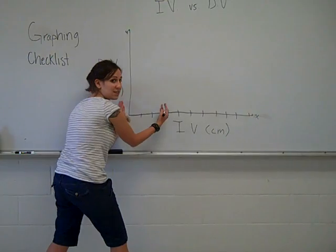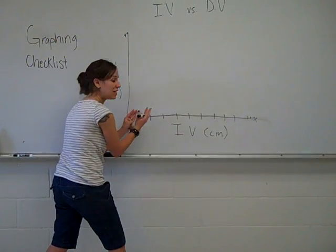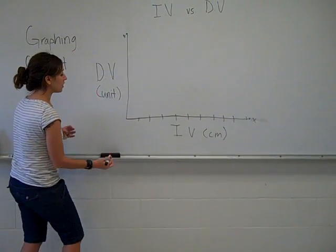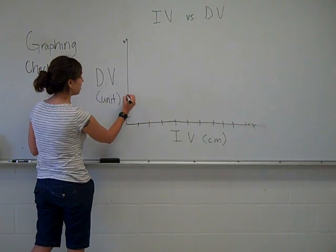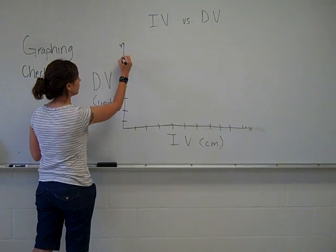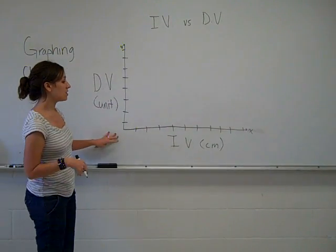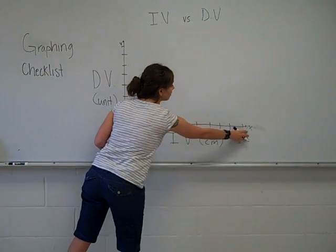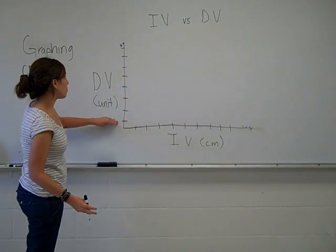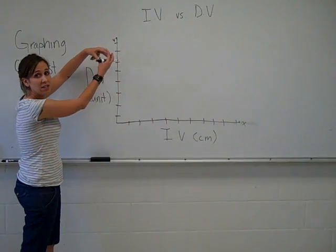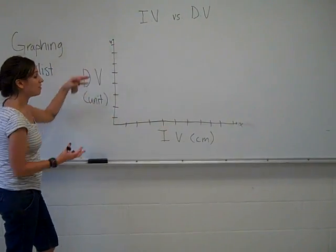You don't want to have your axis all crunched up right here and then you're not going to be able to see the trend. Same thing with the dependent variable. So you have your units measured out evenly. The best way to do that is to look at your data, pick the lowest point to the highest point, and then space it out in between that evenly.